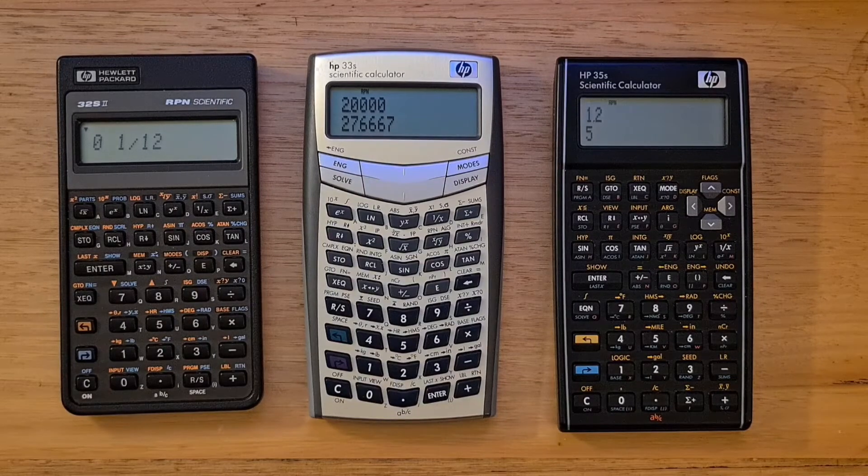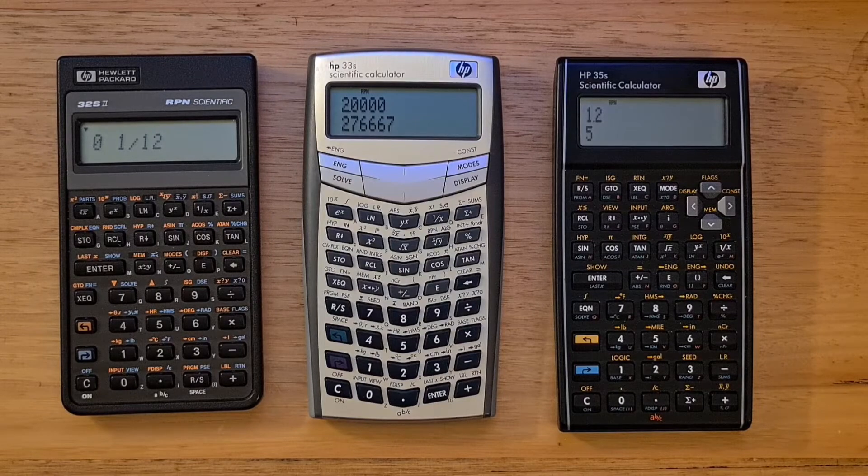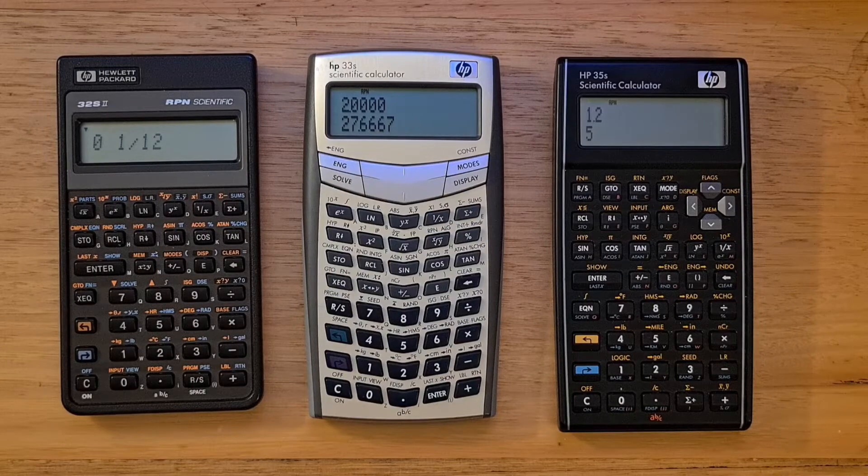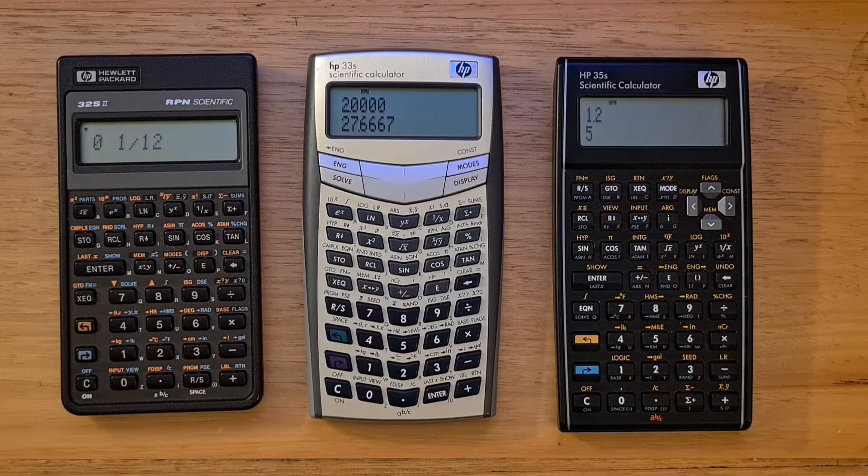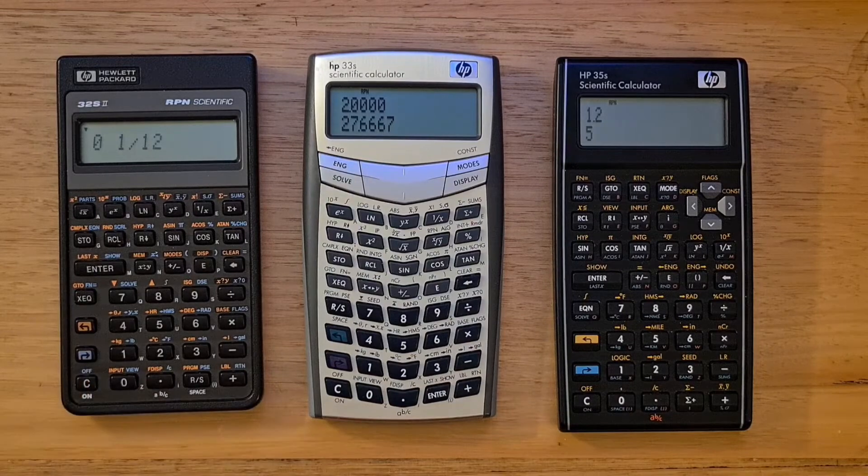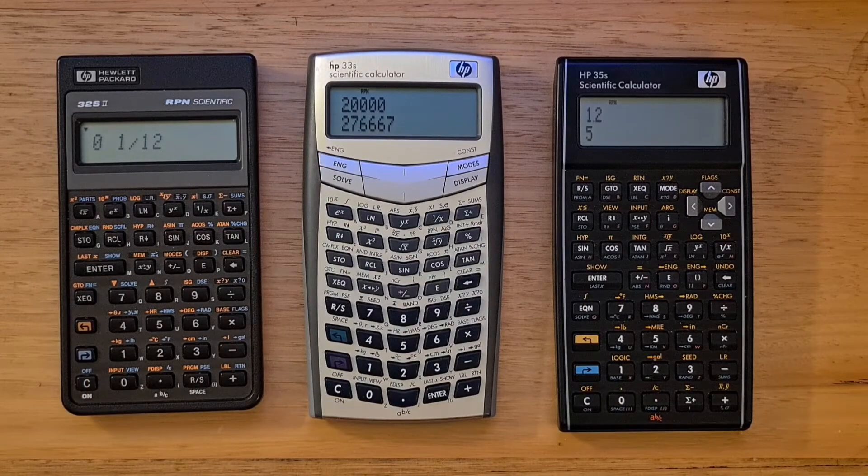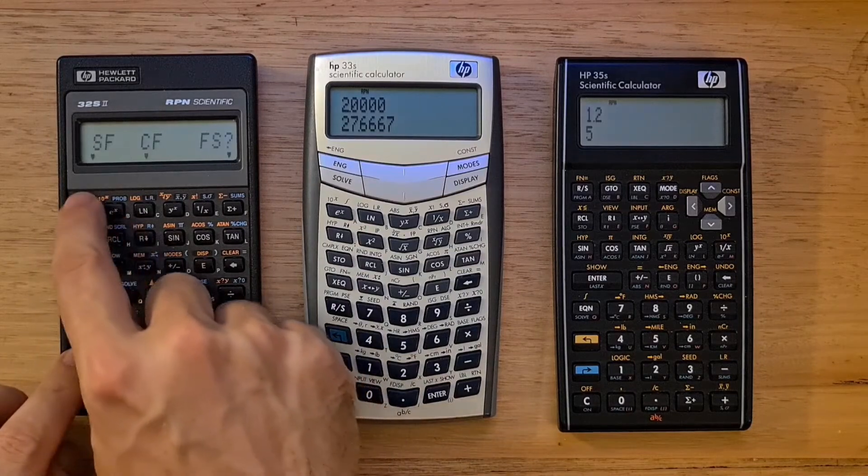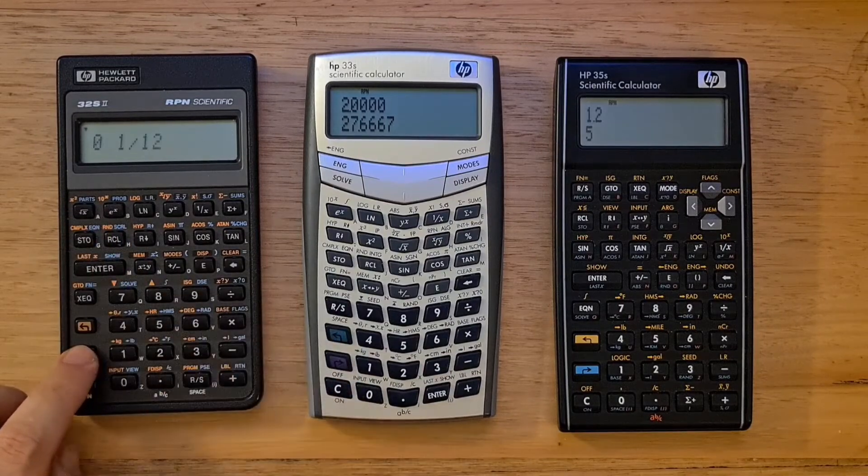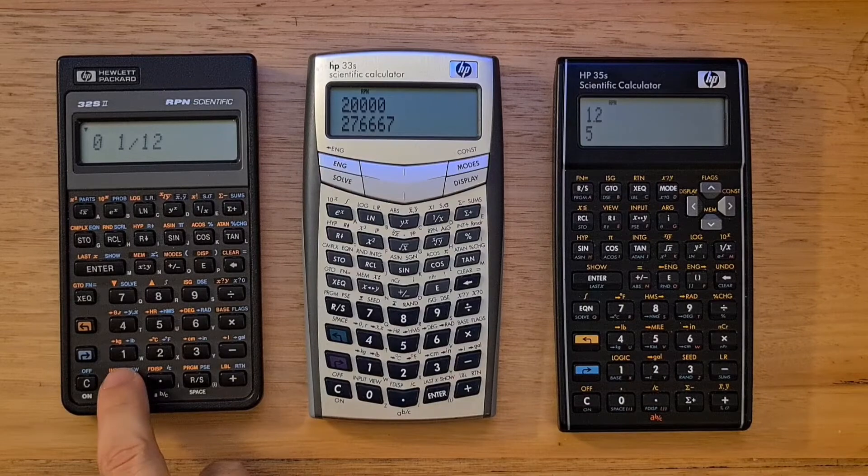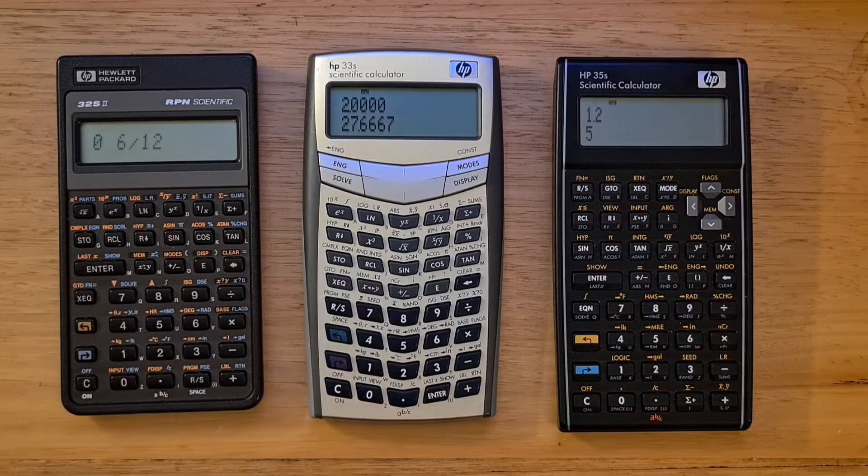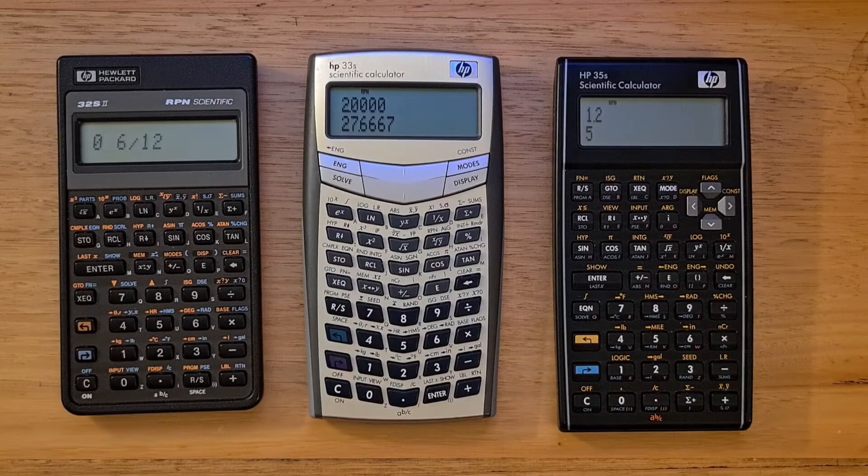Another useful feature of the fraction support is the ability to set a maximum denominator or a fixed denominator. For example, to always show fractions in twelfths, we can set our denominator value using the slash C key. We also would need to set flags eight and nine. Now if I type, say 0.5 and hit enter, that will get displayed as a fraction in twelfths.